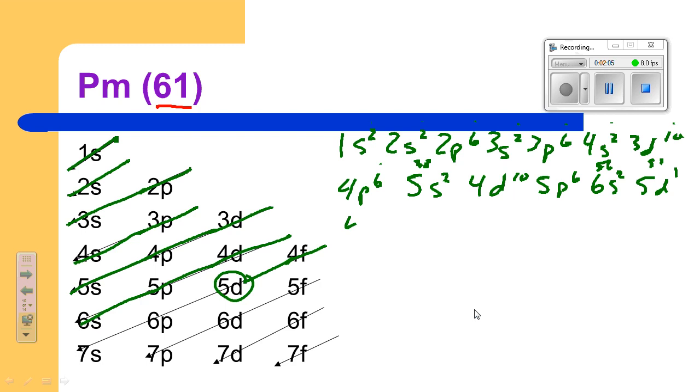And then next I go to 4f, because that was where I was supposed to be, is at 4f. And I need, let's see, what was I at? I was at 57, I need 4, so I'm at 4f4. So this is one weird place in the diagonal rule.